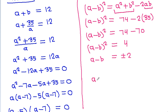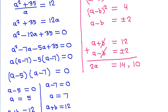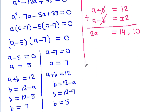We have a plus b equals 12 and a minus b equals plus or minus 2. Adding both equations: 2a equals 14 or 10, so a equals 7 or a equals 5.